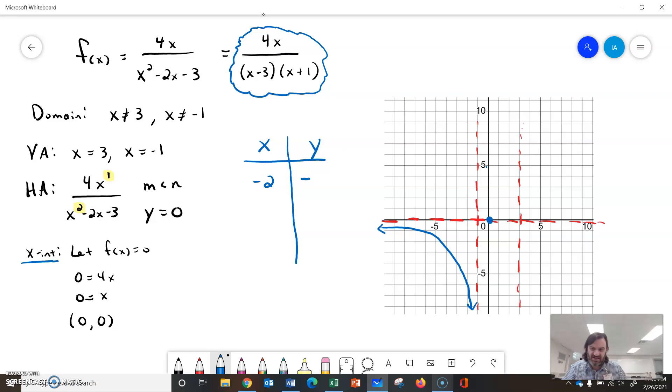The next region is to the right of 3. I'll use 4 or something bigger - you don't have to use these exact numbers as long as they fall into the correct region. Plugging in 4, I get positive on top, positive times positive on the bottom, so positive over positive gives positive. The only option is for it to come across the top on the right-hand side.